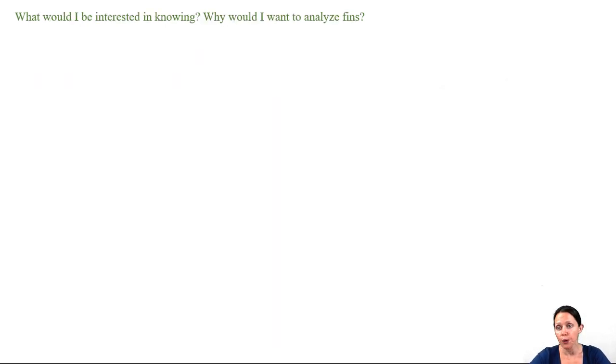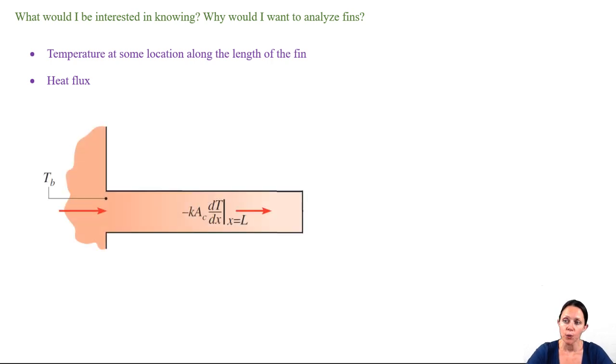So what things are we going to be able to analyze about the fin? We'll start with figuring out the temperature at some location along the fin and the heat flux being removed from the base to which the fin is attached at some temperature Tb. Here's a single fin of uniform cross-sectional area, and if I define where the fin meets the base on the left as x equals zero, I see that the temperature at x equals zero is the base temperature Tb.